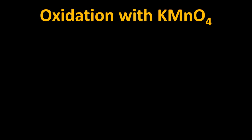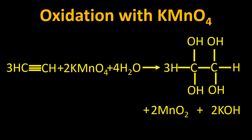Oxidation with potassium permanganate (KMnO₄): potassium permanganate is a strong oxidizing agent, meaning it reduces itself to oxidize others. In the reactant, manganese has a valency of +7. In the product, MnO₂, manganese has a valency of +4. Moving from reactant to product, it gains three electrons — going from +7 to +4 — which is reduction.